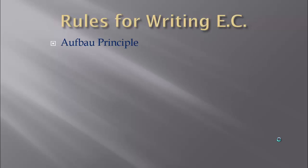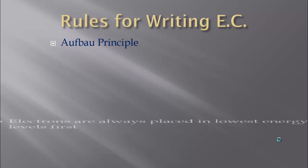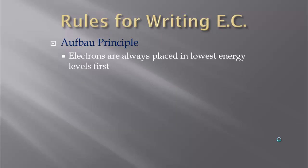When we write electron configurations, there are a couple of rules. The first one is the Aufbau Principle. This says that electrons are always placed in their lowest energy levels first. So we're always going to start closest to the nucleus and then work our way out. If you think about it, it makes sense.